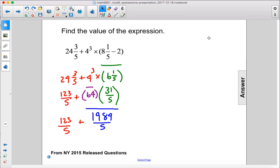Our next step will be to multiply 64 by 31, and that gives us 1984 divided by 5 plus 123 divided by 5.